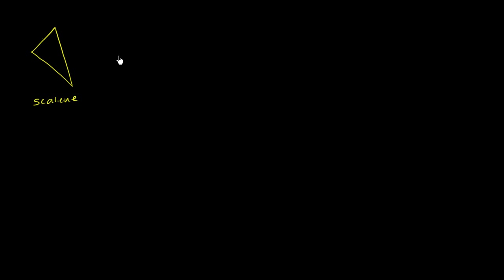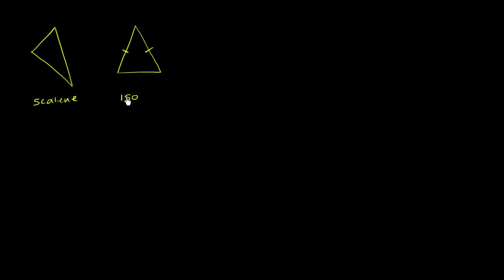If I have at least two of the sides being equal — so let's say that side is the same length as that side right over there — we could call this an isosceles triangle.